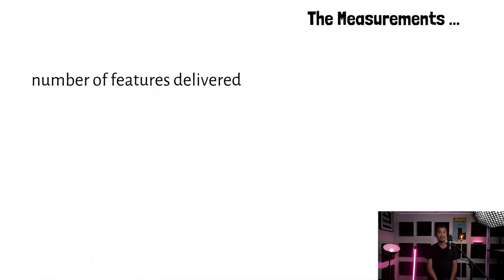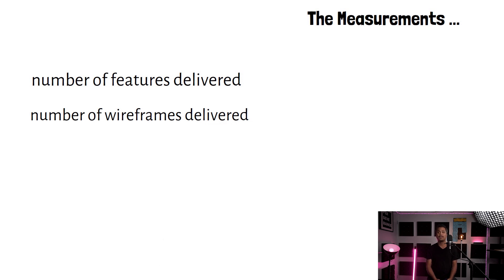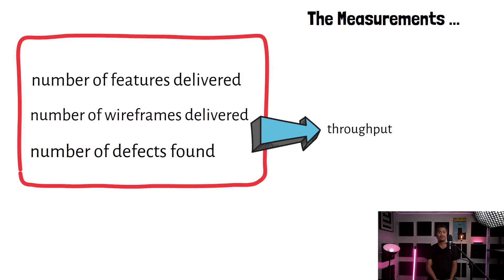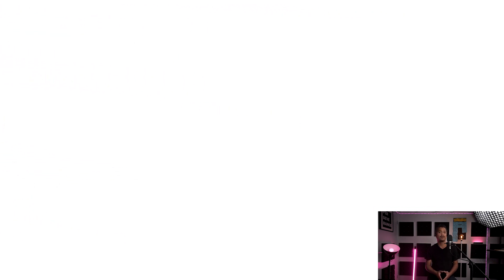Both output and outcome are measurable. The number of features the Scrum team delivered every sprint — that's an output metric. The number of wireframes delivered — that's an output metric. The number of defects found — that's also an output metric. Teams using Kanban call these metrics throughput, so you can say throughput is an output metric. Teams using story points measure velocity, so velocity is also an output metric. Teams doing waterfall consider project timeliness as a success criterion — project timeliness or project completion is an output metric.